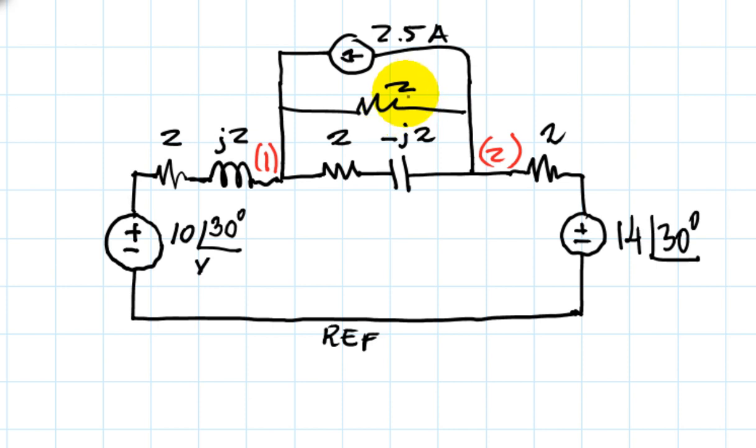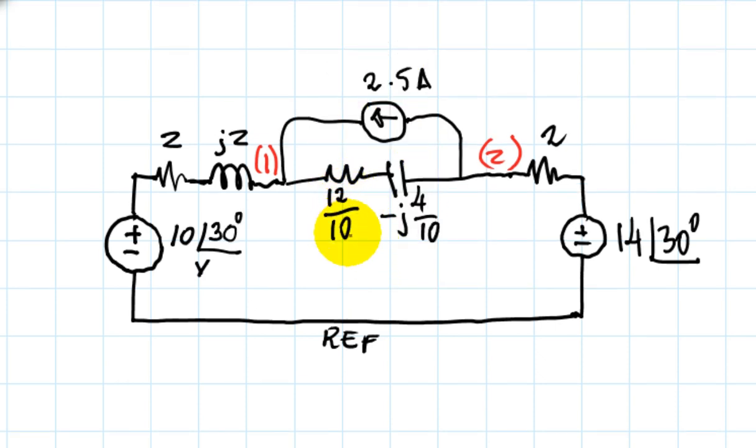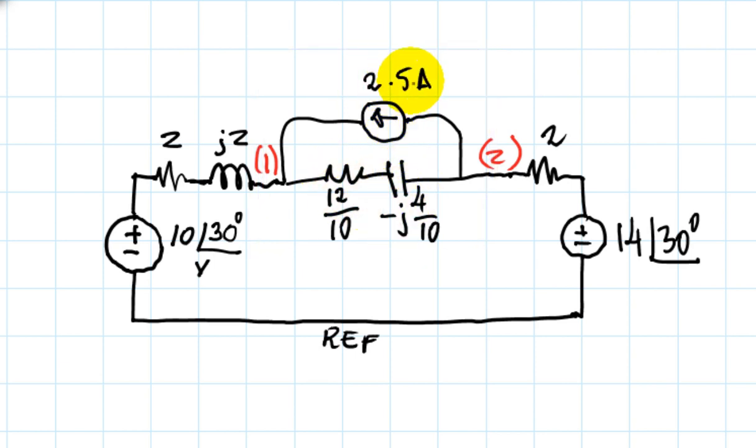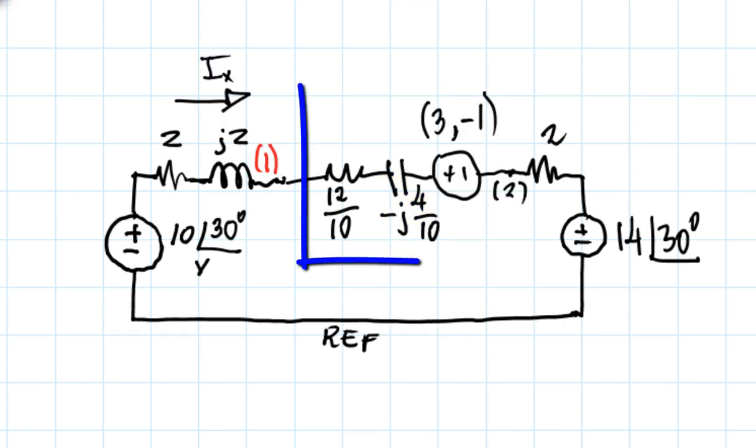2-Ohms resistor in parallel with this 2-J2 Ohms is very tempting not to simplify them. So let's simplify them. Simplified. 1.2-J0.4 Ohms in parallel with that source, 2.5 amps. Well, we can convert obviously back that current source and these Ohms to a voltage source in series with the same Ohms. And let's do that. We multiply 2.5 times this complex number down here. And that is the value of the voltage source and then in series with this impedance. There you go.